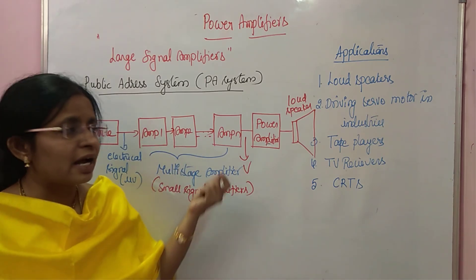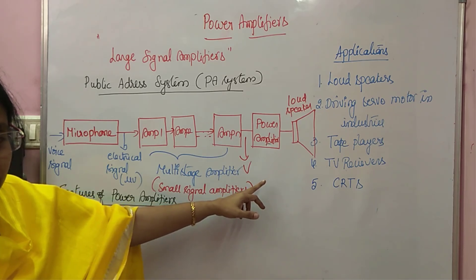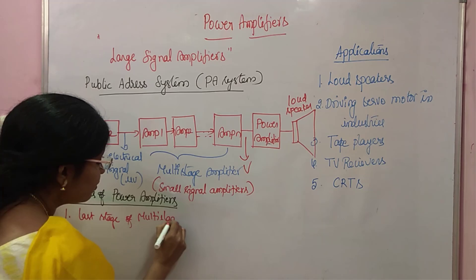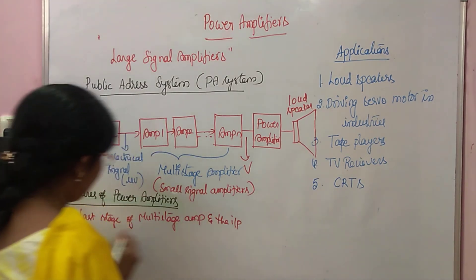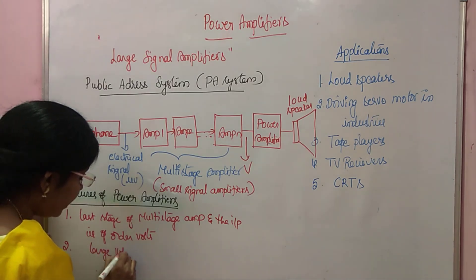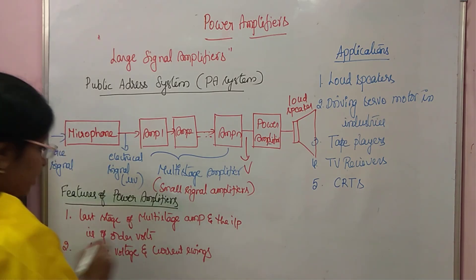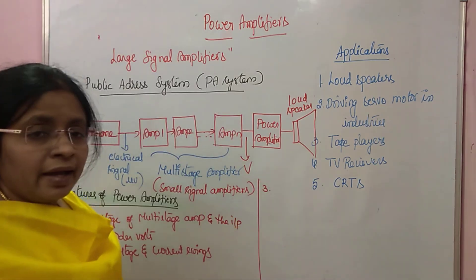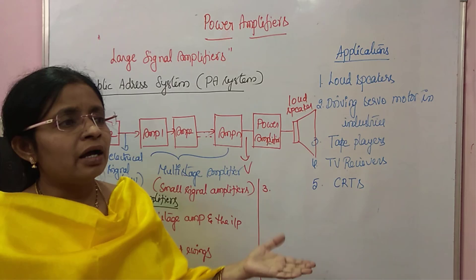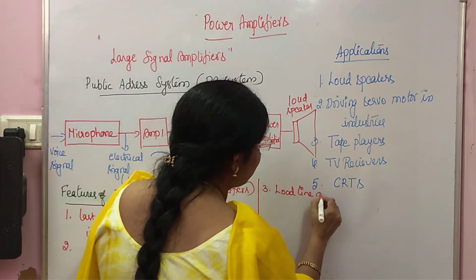What are the features of these power amplifiers? The first feature is: it is the last stage of the multi-stage amplifier, and the input for the power amplifier is of the order of volts. The second feature is large voltage and current swings — obviously, as it is handling large signals, it has large voltage and current swings. The third feature: to analyze a small signal amplifier at low frequencies we use the H-parameter model, and at high frequency we use hybrid-pi. But to analyze the power amplifier, we are going to use load line analysis — not H-parameter or hybrid-pi model.